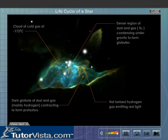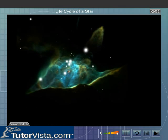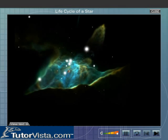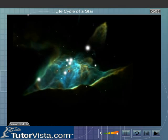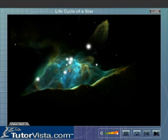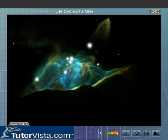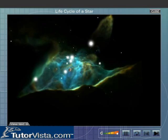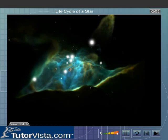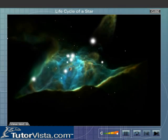The protostar, which is a dense mass, further contracted under its own gravity. As a result of contraction, the atoms of the hydrogen present in the protostar collided with one another and the temperature increased further. At this high temperature,